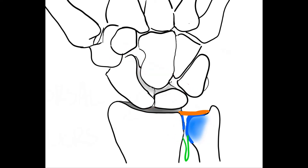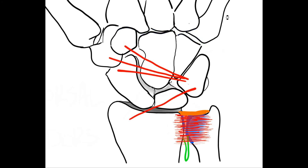The carpometacarpal joints are those in between the carpal bones and the metacarpals. Those of the long fingers have very little mobility, increasing from the radial to the ulnar joints. Individually, each joint is plain. They form a single synovial space. The palmar and dorsal carpometacarpal ligaments provide the stability to this joint.